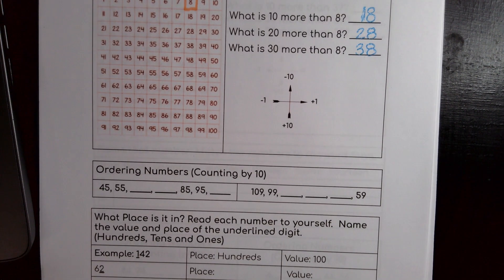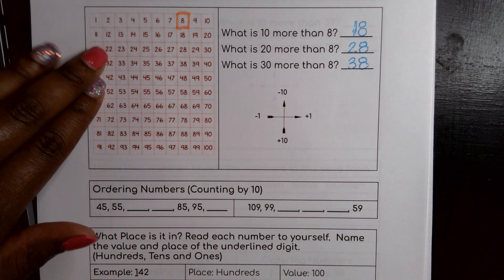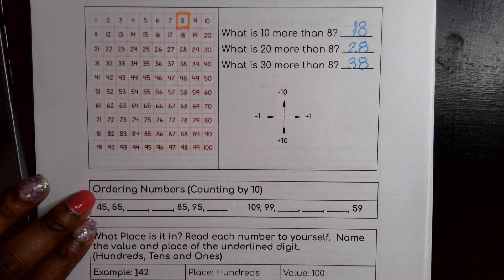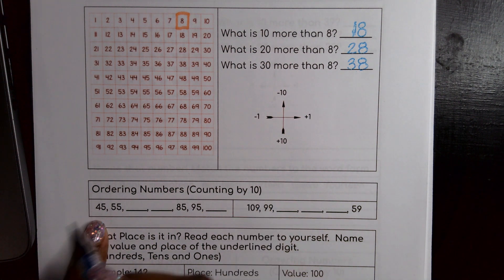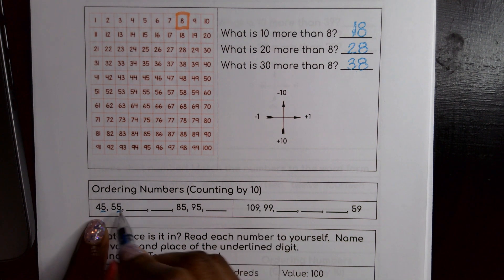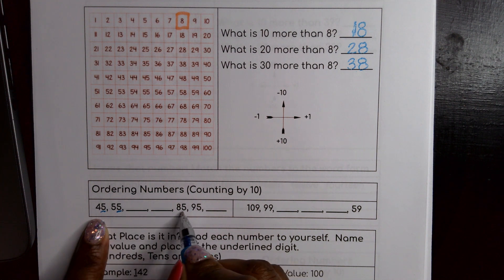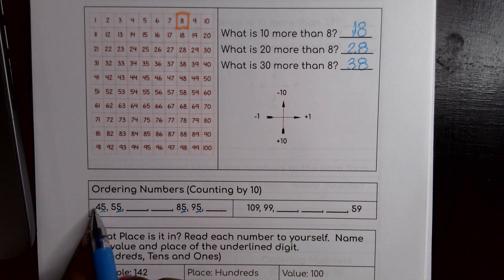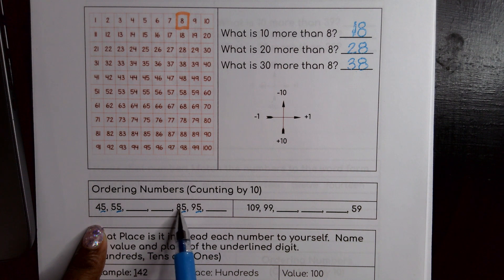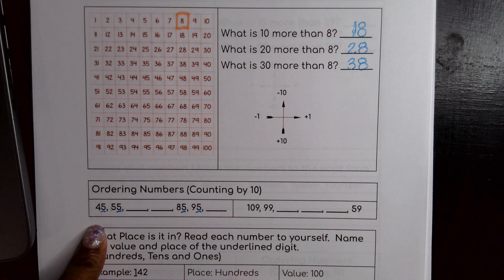Now here I'm going to still leave my hundreds chart here in case I need it. But I'm going to be ordering numbers and it tells me I'm counting by 10. So I don't even have to figure it out. I know I'm counting by 10. So here I notice the same number in my ones place. There's nothing there. There's nothing there. 5, 5. It's the same number. So that's a pattern I notice. But the tens place is changing. There's a 4 here. There's a 5 here. Nothing there. Nothing there. There's an 8 here. There's a 9 here. So that keeps changing.